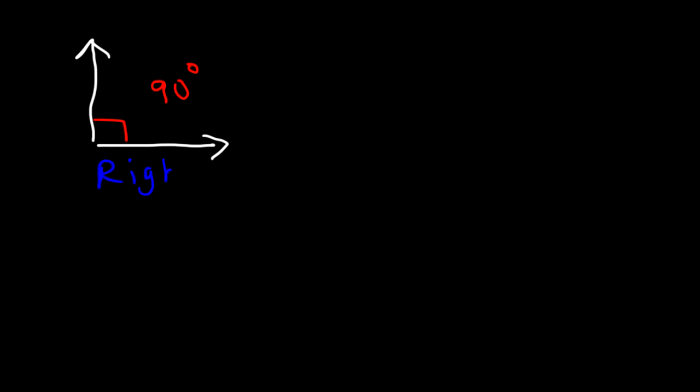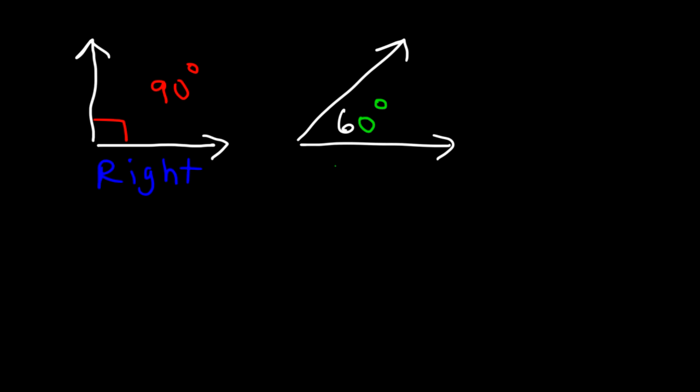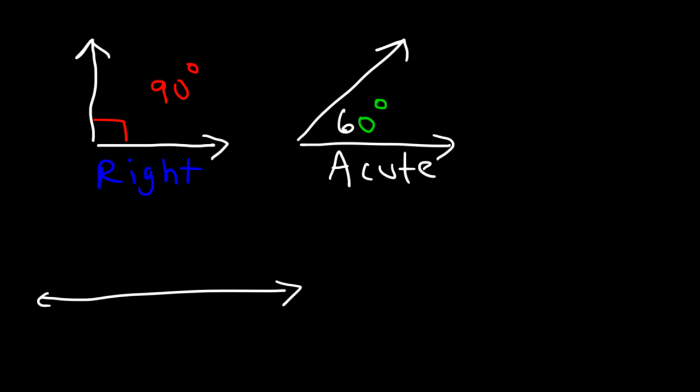What is the difference between an acute angle, a right angle, a straight angle, and an obtuse angle? In geometry, a right angle is a 90-degree angle — sometimes you'll see a small box indicating it. An acute angle is simply an angle that's less than 90 degrees but greater than zero, so 60 degrees is an acute angle. A straight angle is basically equivalent to a straight line — it has an angle of 180 degrees.